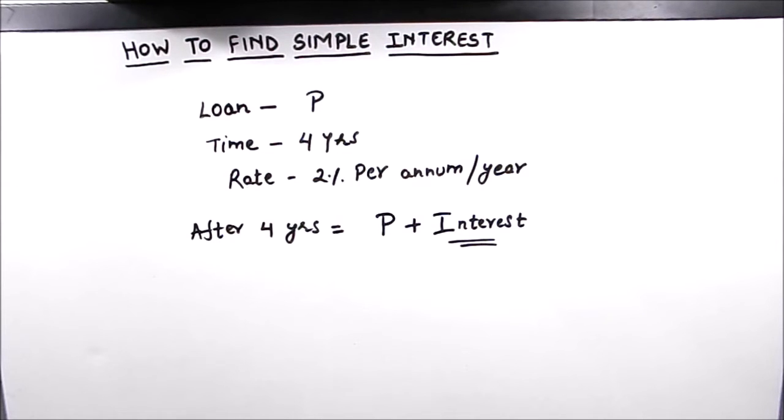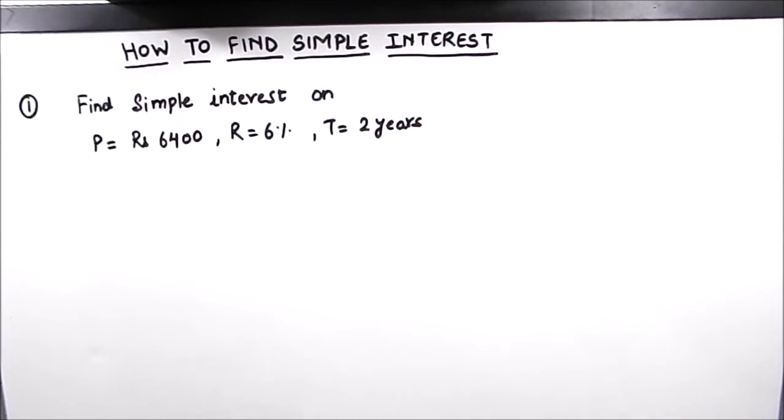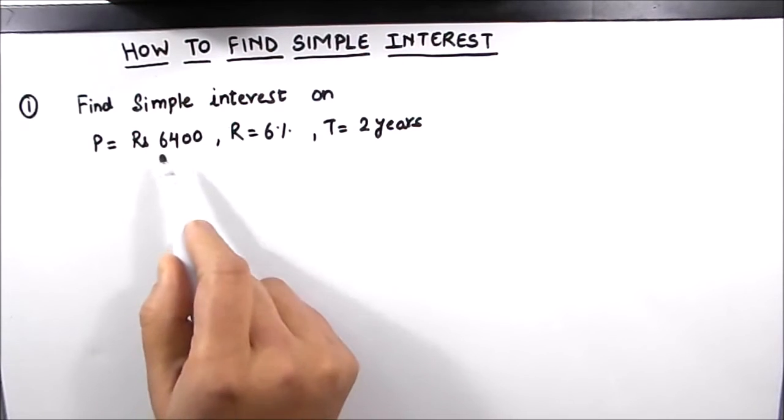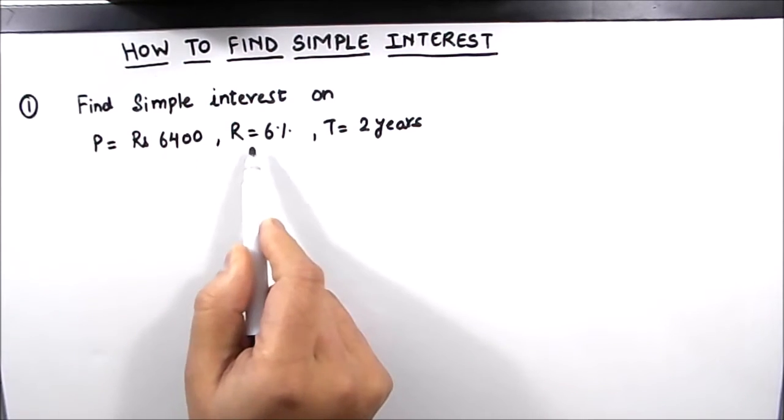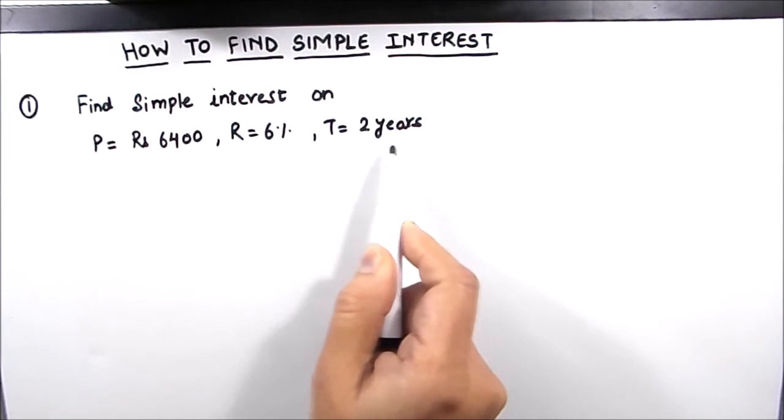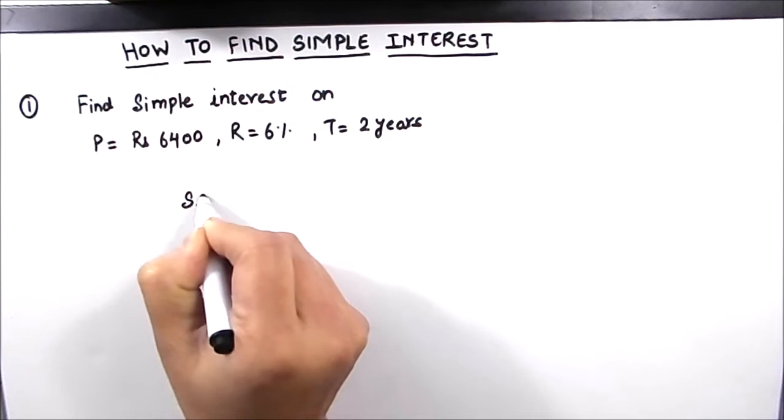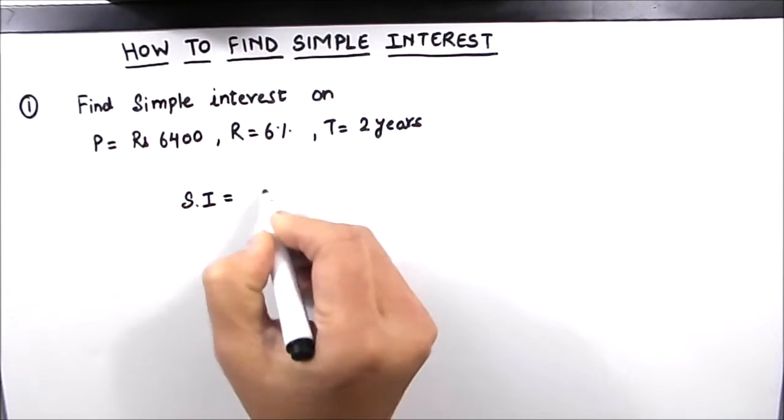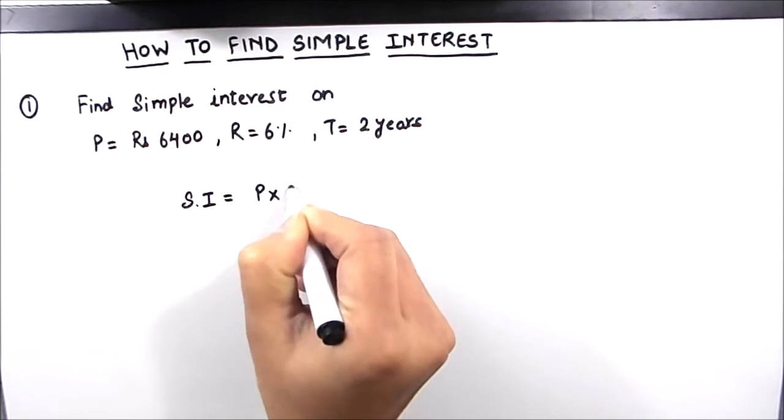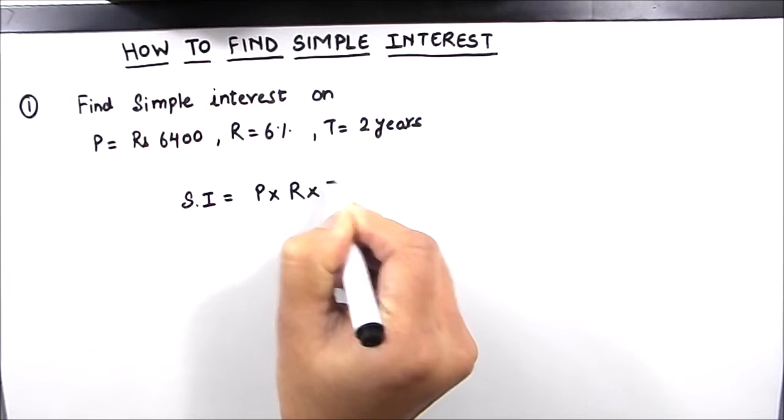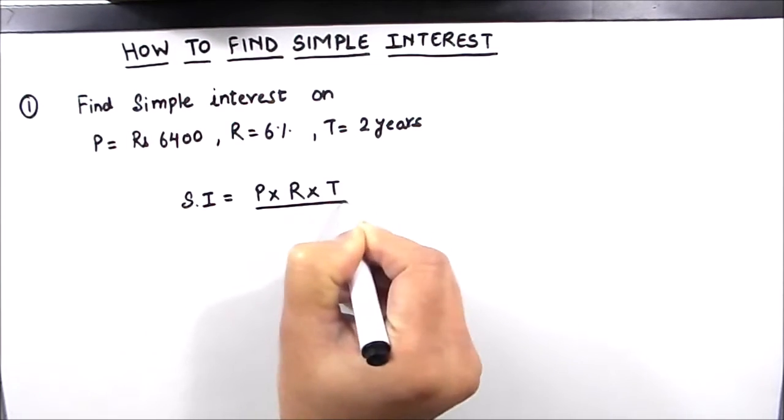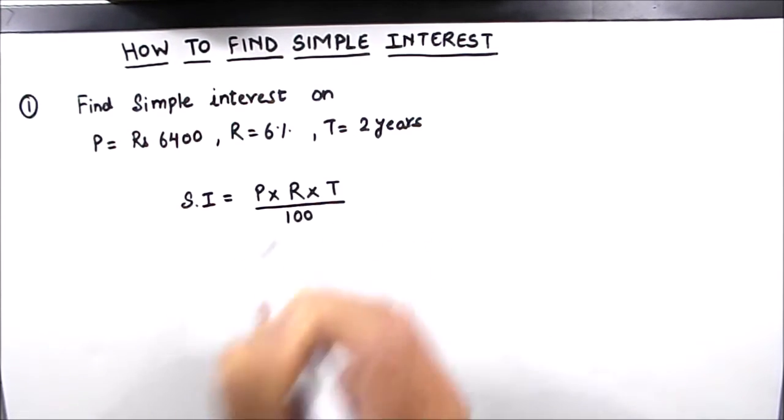So our first example here is to find the simple interest on the principal amount of rupees 6400 at a rate of six percent for two years. First of all we'll write the formula for simple interest. The formula for simple interest is principal times rate of interest times time divided by 100. In this formula the rate of interest is in percentage.